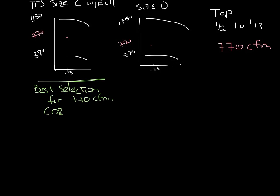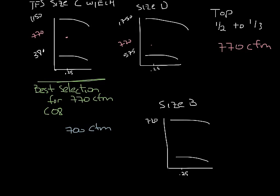Now if you needed 700 CFM, there would actually be three possible unit casing sizes that would work, because the size B TFS with the ECM motor has a fan curve that has a maximum at 720 CFM at 0.25 inches.